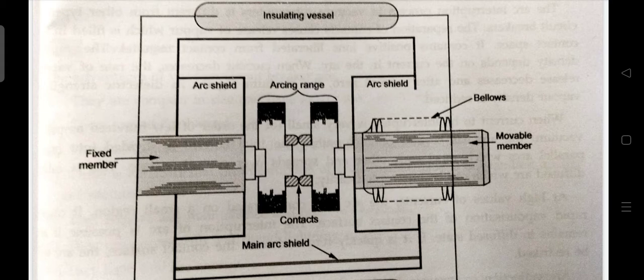The working will be when the breaker operates, the moving contact separates from the fixed contact and arc is struck between the contacts. The production of arc is due to the ionization of metal ions and depends very much upon the material of contacts. The arc is quickly extinguished because the metallic vapors, electrons and ions produced during arc are diffused in a short time and seized by the surface of moving and fixed members and shields.